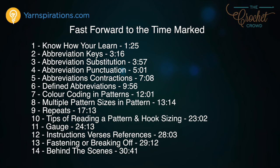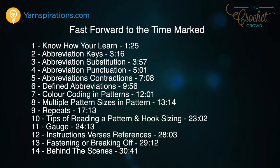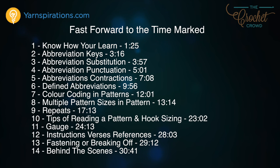On screen now are: how you learn, abbreviation keys, abbreviation substitution, abbreviation punctuation and plurals, abbreviation contractions, defined abbreviations in patterns, color coding with the alphabet, sizing differences used in brackets, repeats used in a pattern, defined hook sizes, pattern gauge, instruction versus referral locations, and fastening or breaking off — and behind the scenes of pattern writing.